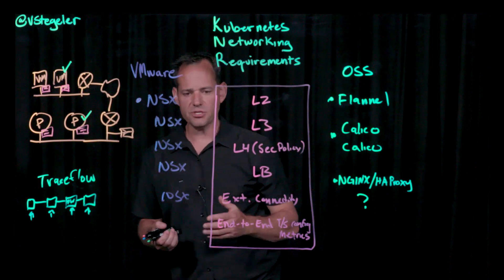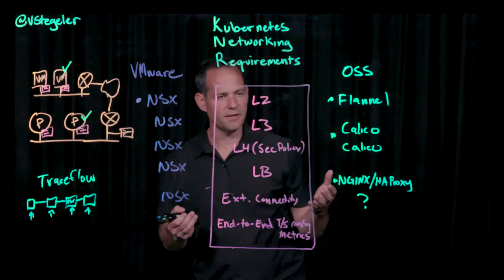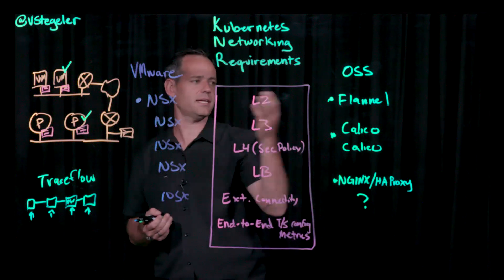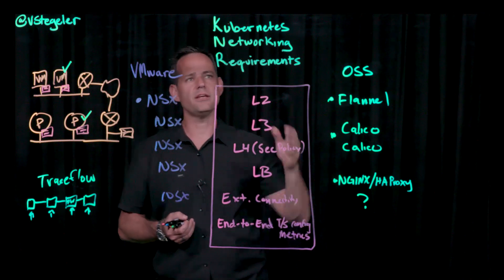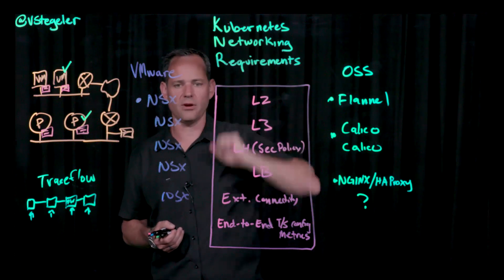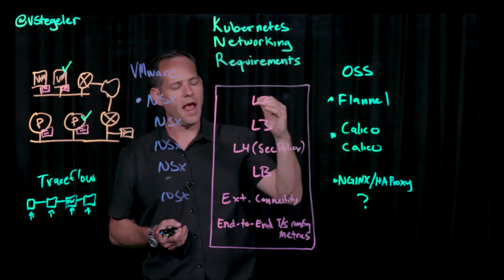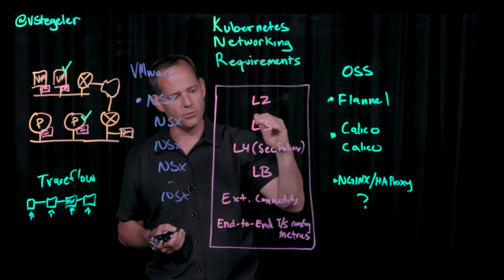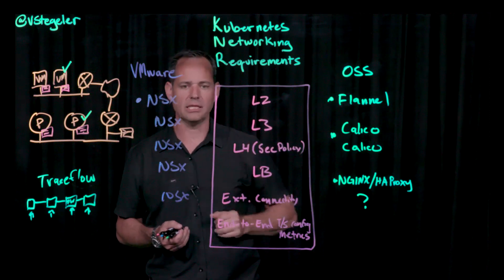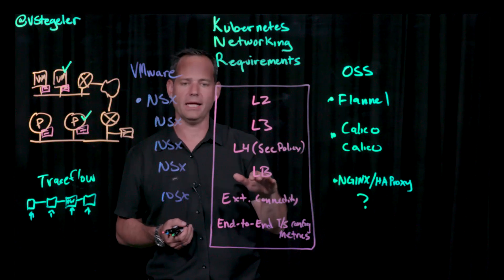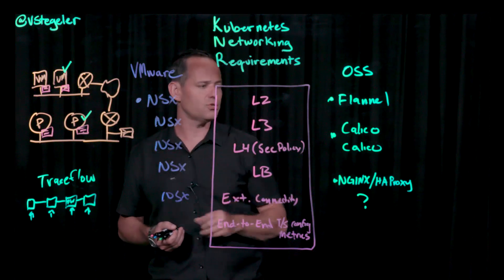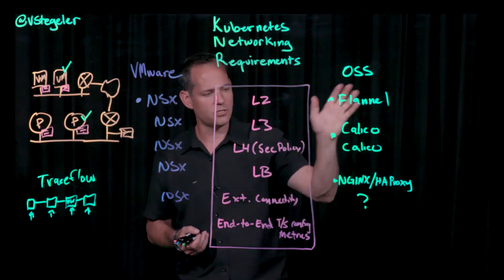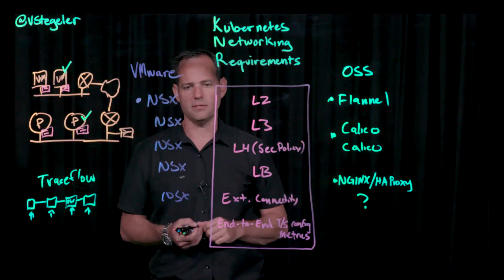So hopefully this sheds some light on kind of the real difference. Again, a lot of the time we get the NSX versus flannel discussion happening, but the reality is you've got to look at the entire networking stack of Kubernetes, and you have to look at the apps and what they're going to require. And generally, it's layer two, layer three, there's security policy and load balancing. So you've got to go figure out how to get that done. NSX single solution versus maybe some open source, three different open source methods.